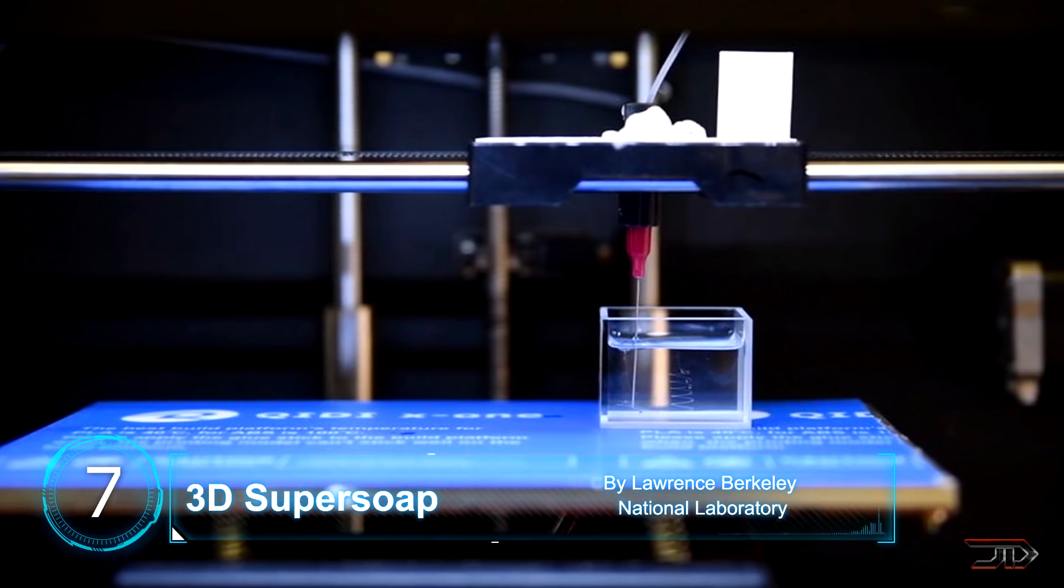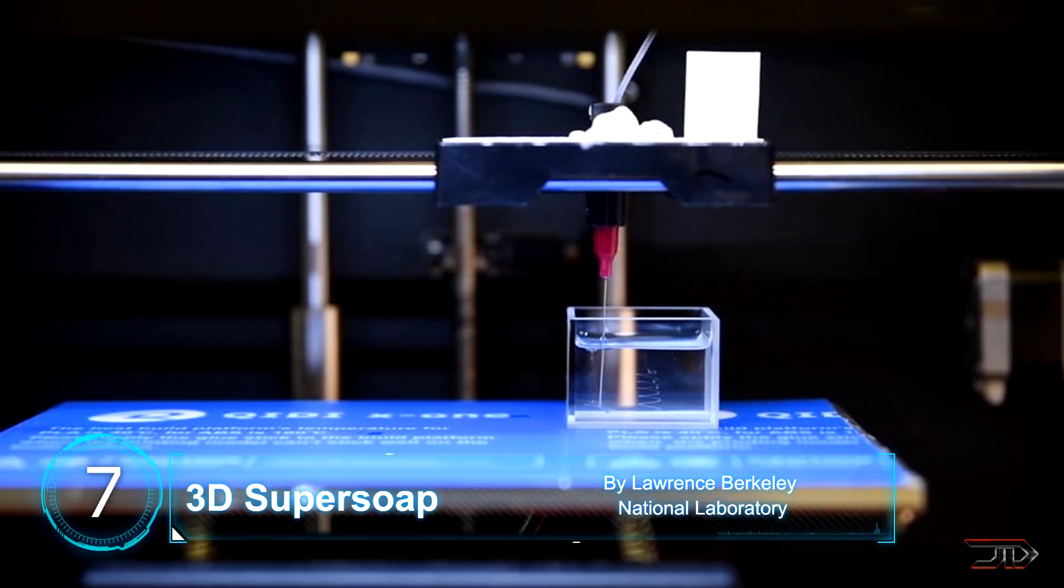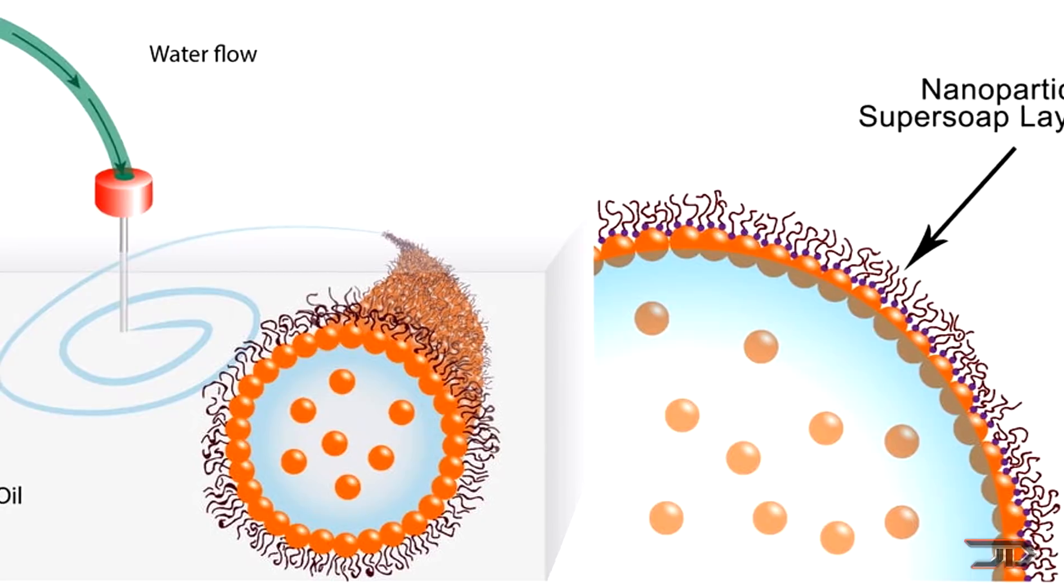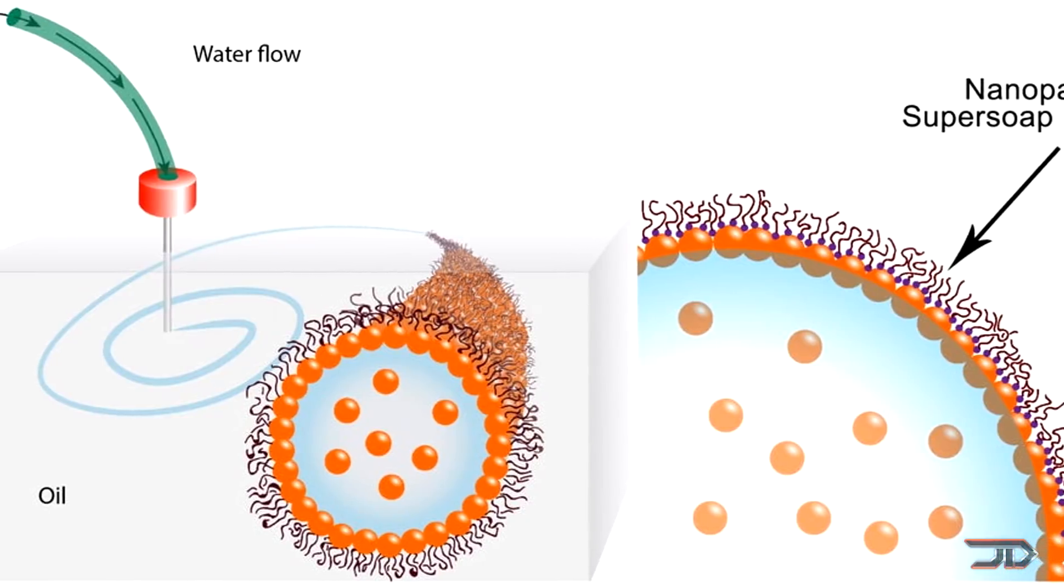A really neat modification allows scientists to 3D print structures composed entirely of liquids. It injects threads of water into silicone oil, and a nanoparticle barrier is formed around the water, which locks it into place.